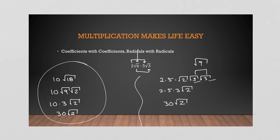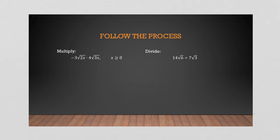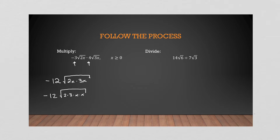I prefer the way on the left because it's a little smoother, but however you need to do it. Let's look at another one. We're going to take negative three and multiply it by four to get negative twelve. Then we multiply two x times three x under the radical. Remember multiplication order doesn't matter, so we rewrite as two times three times x times x under the square root. We have two identical factors, so x comes out. We end up with negative twelve x times root six.